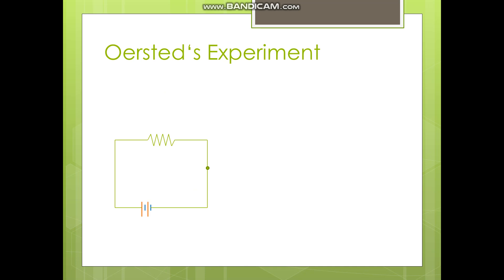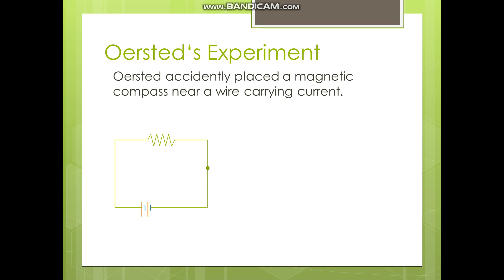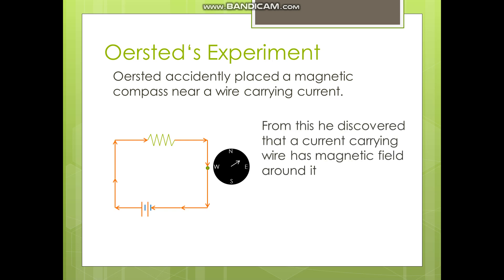Scientist Oersted discovered that a current-carrying wire has a magnetic field around it. Oersted accidentally placed a magnetic compass near a wire carrying current. When current was passed through the wire, there was a deflection in the needle. By this deflection, he discovered that a current-carrying wire has a magnetic field around it.